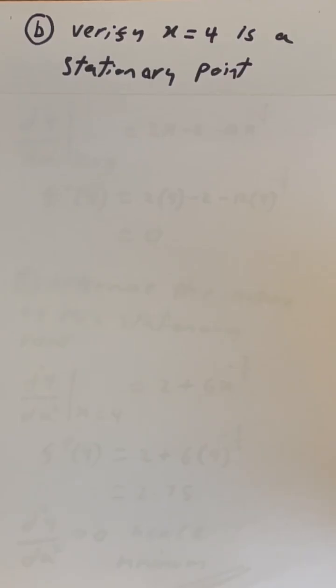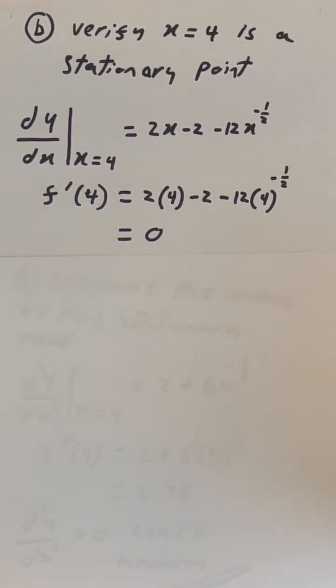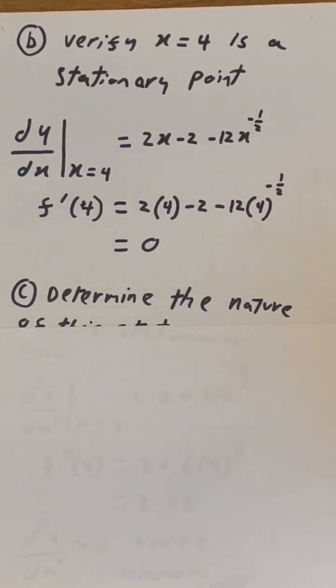Going back to part B, we can take the first derivative and put x equals 4. If it equals 0, which it is, that means it's a stationary point. By the way, we're seeing some new notation here. These two are two different ways of writing each other. Now that we've verified that, let's move on to part C.